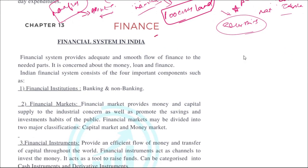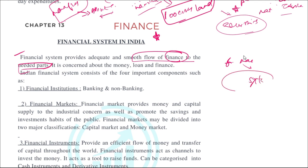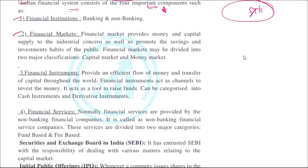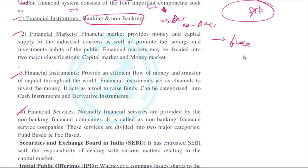Now, moving to general knowledge about finance in India: the financial system provides an adequate and smooth flow of finance to needed parts — in short, how money and assets flow through the economy. The Indian financial system has four components: financial institutions, financial markets, financial instruments, and financial services. Financial institutions are mainly banking and non-banking; from these institutions you can collect money when needed.